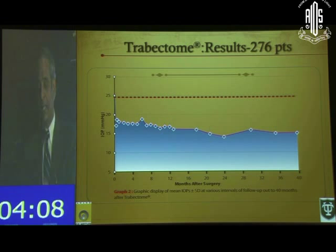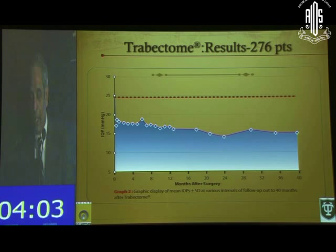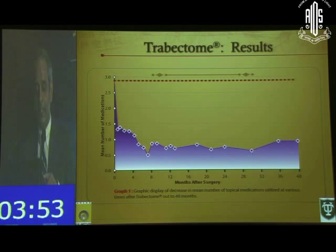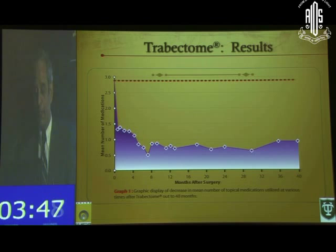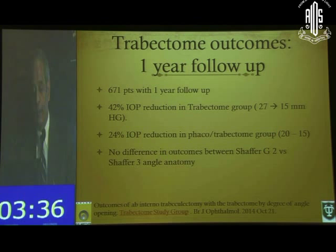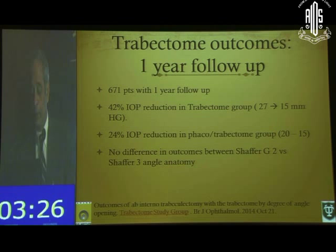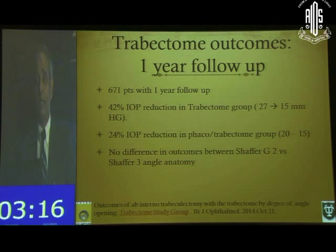Looking at the safety profile of Trabectome surgeries — approximately 300 patients, with a peak pressure of 25 — over 40 months of follow-up, pressure remained around 15 mmHg and medications dropped from 2.5 to approximately 1. A recent Trabectome study group paper published in the BJO with 671 patients and one-year follow-up showed a 42% IOP reduction in the Trabectome group (27 to 15) and 24% in the phaco-Trabectome group (20 to 15). It made no difference whether patients had narrow or open angles, and the safety profile was excellent with no glaucoma surgery-related complications.